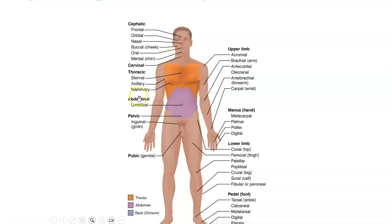Cervical refers to the neck region. You may notice the terms cervical, thoracic, and lumbar are familiar — they are typically used to describe the vertebrae that form your spine or backbone. There are seven cervical vertebrae, referred to as C1 through C7. There are 12 thoracic vertebrae and five lumbar vertebrae. So cervical just refers to the neck region.